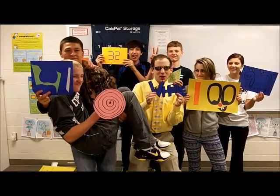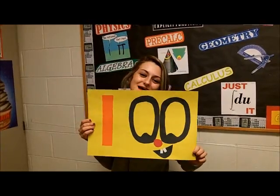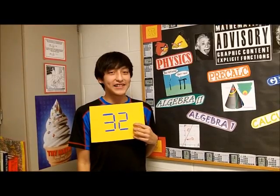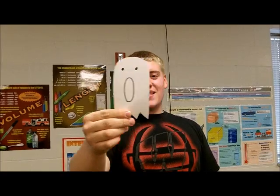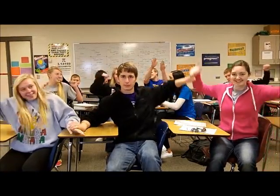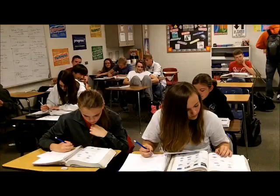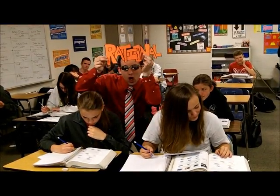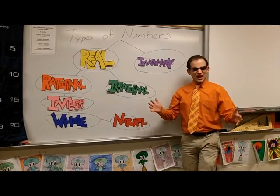Let's do some whole numbers. 0 and negative 2. 25 and 100. 41 and 32. How about some integers? 574, negative 71, 0 and 44. They are still rational. Rational. Rational. Rational. They are all rational.